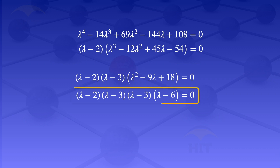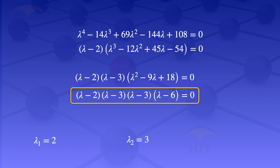From the fully factored equation, we solve for λ. The eigenvalues are: λ₁ = 2, λ₂ = 3, and λ₃ = 6. Since (λ - 3) appears twice in the factored equation, λ = 3 is a repeated root with algebraic multiplicity 2. These are the eigenvalues of the 4×4 matrix we were given.